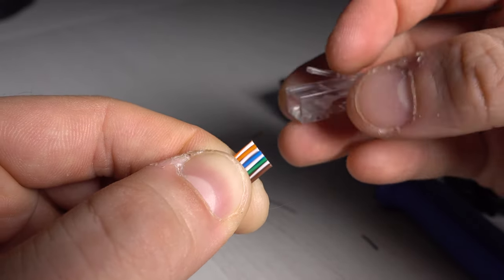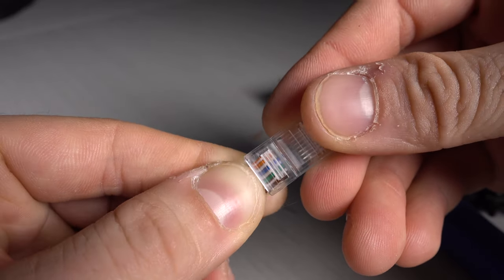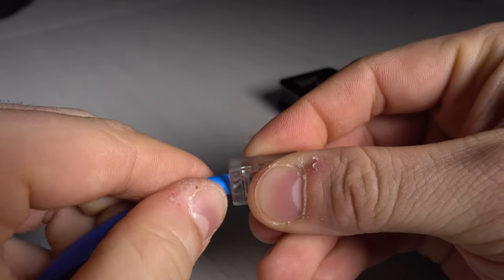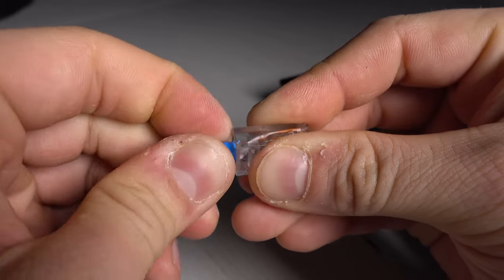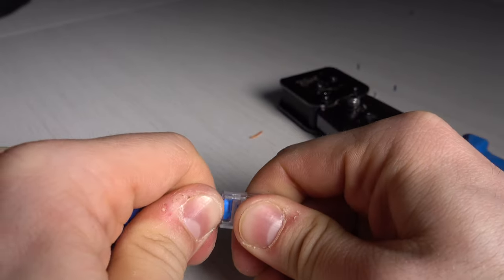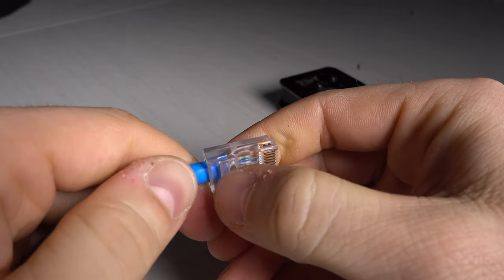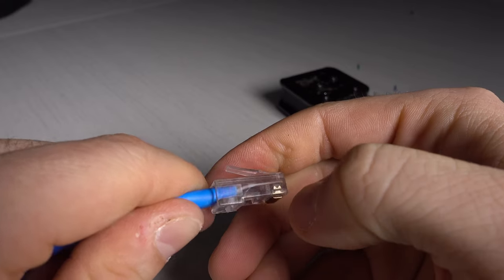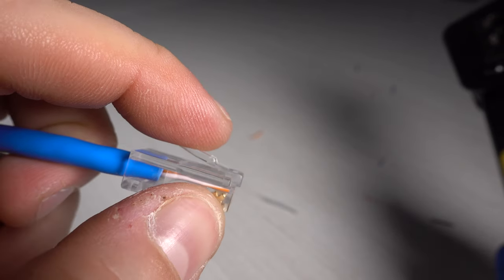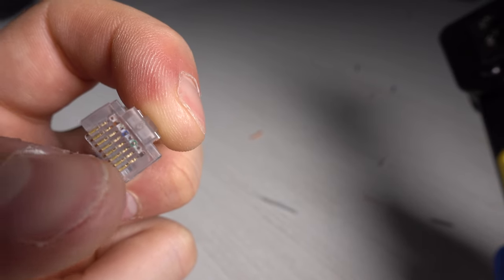And then you insert the connector, tap it in lower, put it right inside. And you want everything in, really important, because this will crimp on this. And make sure you see right there, you have to be sure that all your cables touch the end.